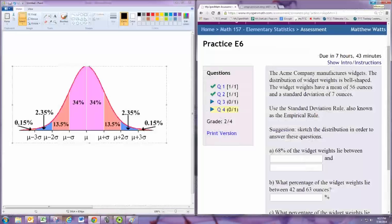In this video, we'll see how to do Practice Problem 4 from Experience 6. The Acme Company manufactures widgets. The distribution of widget weights is bell-shaped with a mean of 56 and a standard deviation of 7. Use the empirical rule, also known as the standard deviation rule. We're going to take the basic empirical rule...